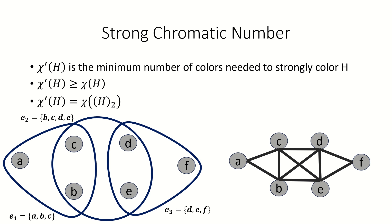The two-section happens to have chromatic number four, and the following is a proper four-coloring of the graph. Therefore, our hypergraph has strong chromatic number four.